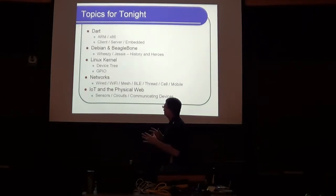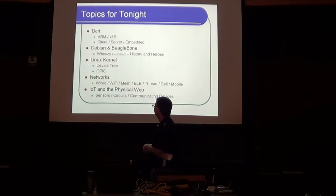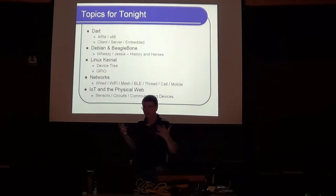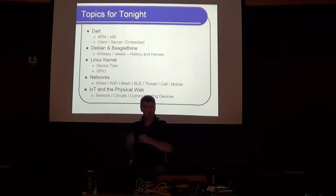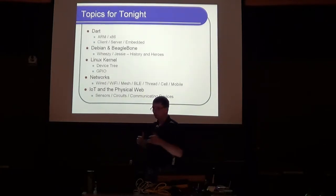So these are the big topics: Dart, which is a programming language; Debian and BeagleBone; the Linux kernel, which pertains particularly to the core commonality of people maybe in the room, with specific benefits in more recent versions especially related to the BeagleBone; networks — we've got mesh running around here; and the umbrella project direction for this, whether you call it IoT — Internet of Things.